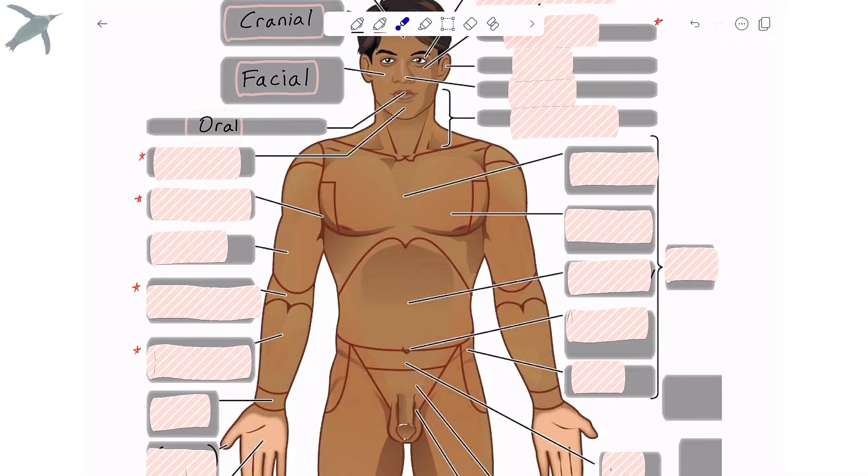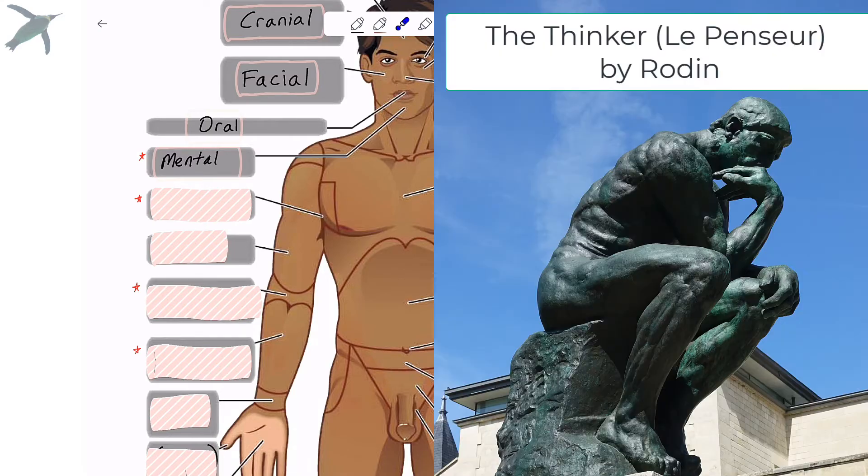The mouth is oral. Now, I've marked with asterisks the ones that students struggle with the most. The chin is called the mental region. I always tell my students to think about that sculpture, the thinker, to help you remember that one.